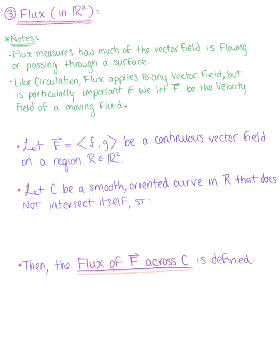The third application of a vector line integral we are going to explore is flux in two dimensions. Flux measures how much of a vector field is flowing through or passing through a surface. Just like circulation, flux applies to any vector field, but it's particularly relevant if we define vector F as specifically a velocity vector of a moving fluid. Defining this as a moving fluid helps us understand how flux measures how much of that field passes through the surface.